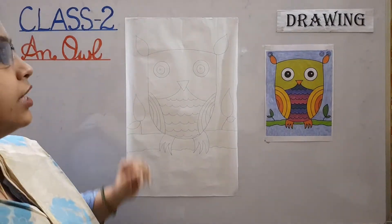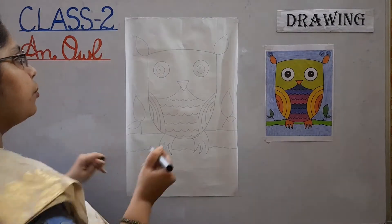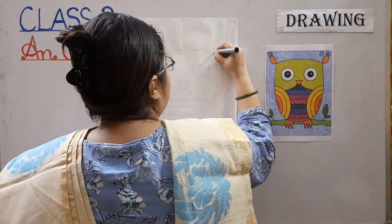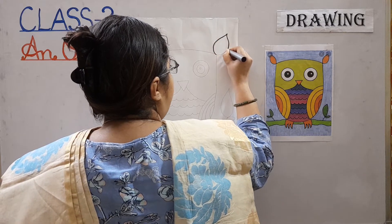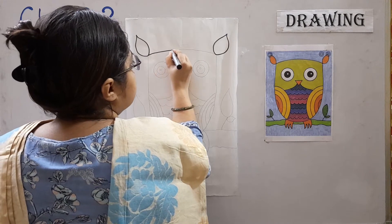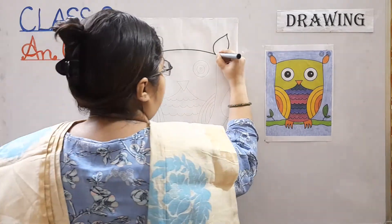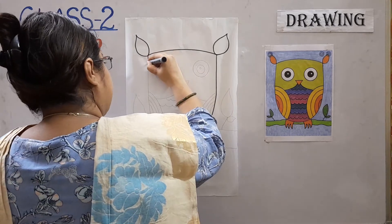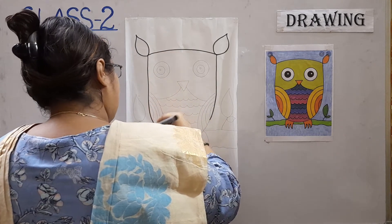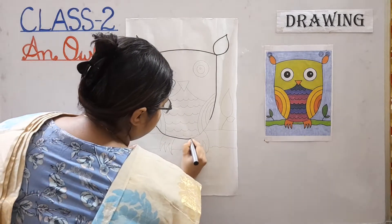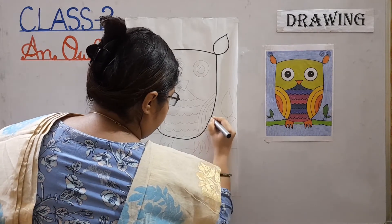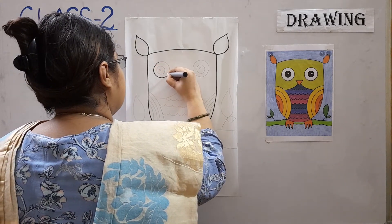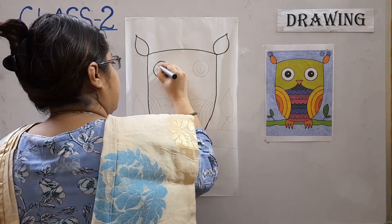Now we are done with the picture sketch. We will be outlining the owl with a black sketch pen. Take a nice black sketch pen so that when you are drawing your picture it comes in one smooth flow. Here we are with the outer body part. You can use a circle shape to make the eyes.